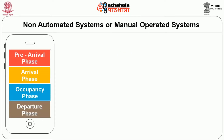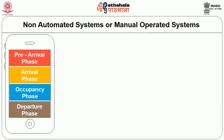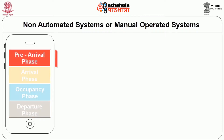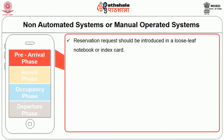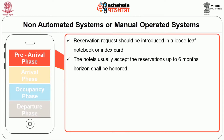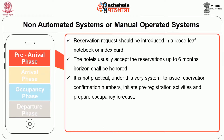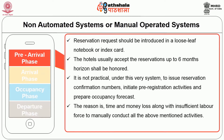In a non-automated hotel, during the pre-arrival phase, reservation requests are recorded through loose leaves, notebooks, or index cards. Such hotels usually accept reservations up to six months in advance. It is not practical under this system to issue reservation confirmation numbers, initiate pre-registration activities, or prepare occupancy forecasts, due to time, money loss, and insufficient labor force.